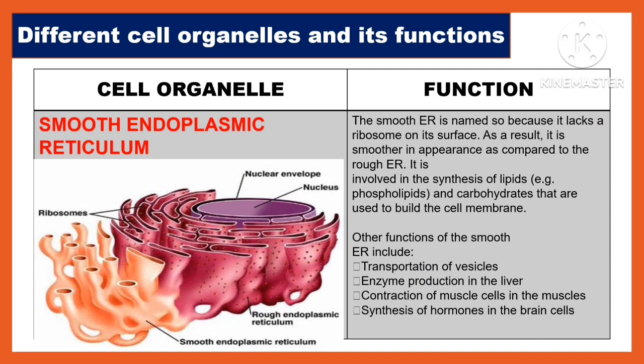Another cell organelle is the smooth endoplasmic reticulum. The smooth ER is named because it lacks ribosomes on its surface, making it smoother in appearance compared to the rough ER. It is involved in the synthesis of lipids such as phospholipids and carbohydrates used to build the cell membrane. Other functions include transportation of vesicles, enzyme production in the liver, contraction of muscle cells, and synthesis of hormones in brain cells.